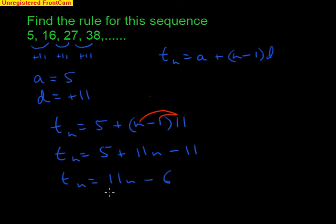And that expression will find you any term that you like. We just want to check to make sure that this is all going right. So let's imagine we're trying to find the second term. Now the second term is 16. So if n is 2 we should get 16. So 11 times 2 is 22, minus 6 does give you 16. So that all works for this one.